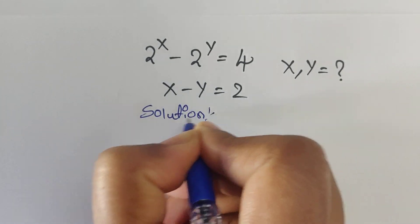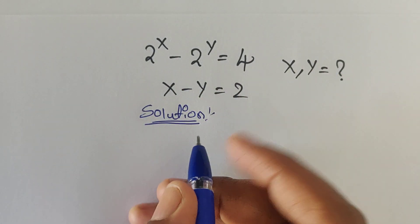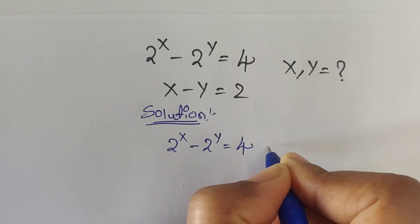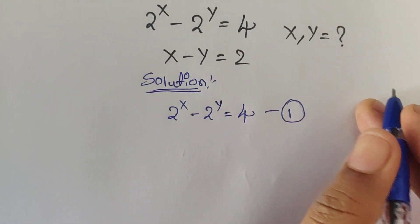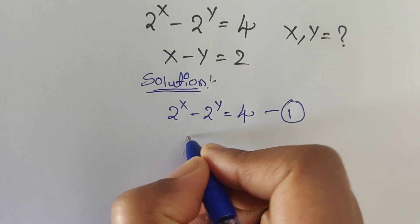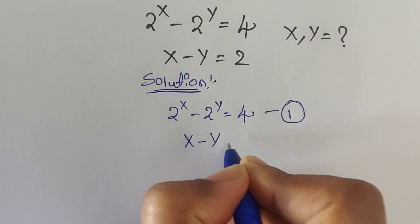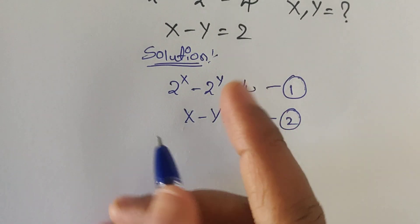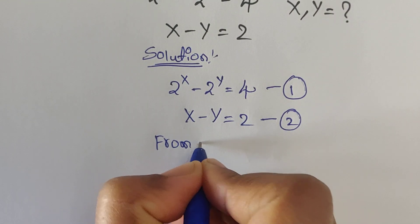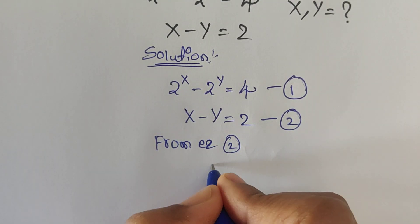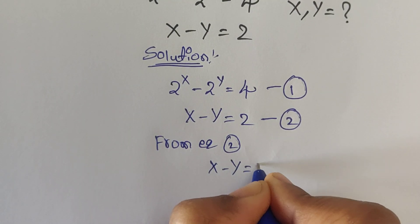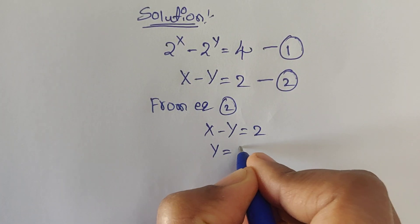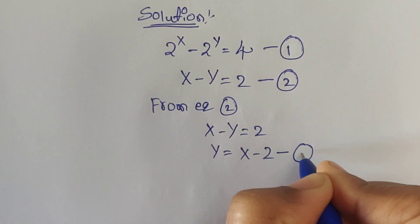Solution. We have been given two equations. The first one is 2^x minus 2^y equals 4 — let us consider this equation 1. And x minus y equals 2 — let us consider this equation 2. From equation 2, x minus y equals 2, we can write y equals x minus 2. Let us consider this equation 3.